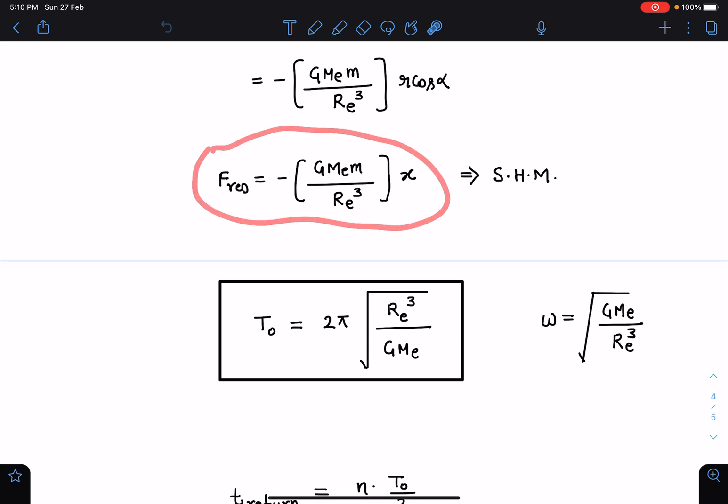I can write the time period in one of the parts or one side of the polygon as T₀ = 2π√(R_e³/GM). That is for coming from one end to another end and then going back, or omega of that SHM is √(GM/R_e³).